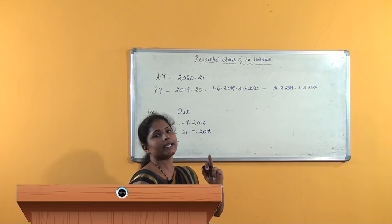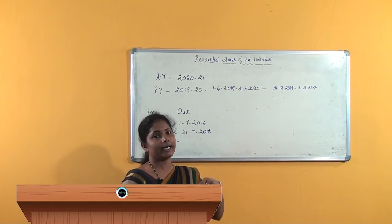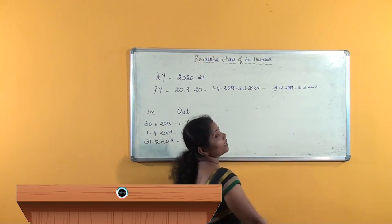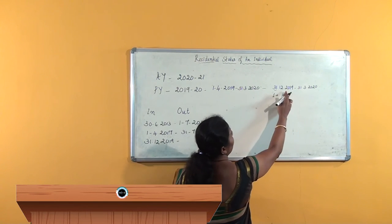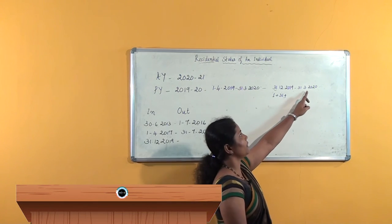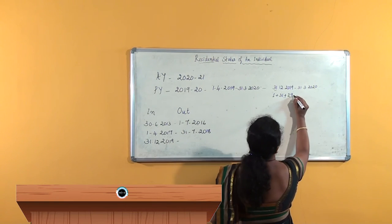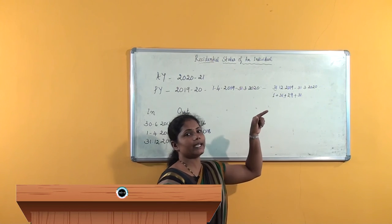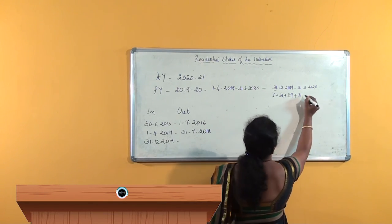We have to count the number of days of his stay in India in the previous year. As I said in the last class, the day of departure as well as the day of arrival must be counted. He comes back to India on 31st December, so in December he was in India for 1 day, in January 31 days, in February 29 days — since 2020 is a leap year — and in March 31 days. So total number of days of his stay in India in the previous year is 1 + 31 + 29 + 31 = 92 days.